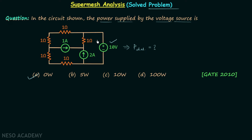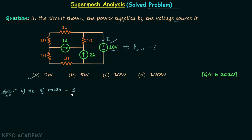We first want to calculate the current in this branch, and once we have that current we will multiply it with the voltage to get the power delivered. Step one in super mesh analysis is the same as in mesh analysis — we identify the total number of meshes. In this network we have one, two, and three meshes, so the number of meshes is equal to three.